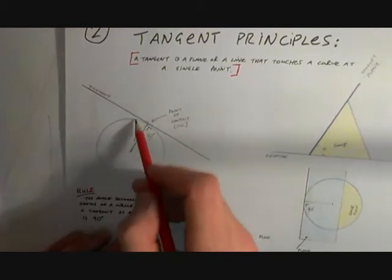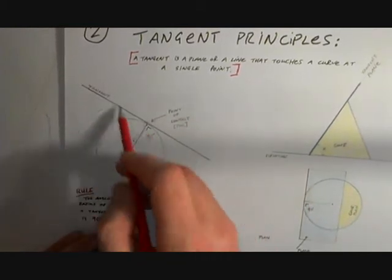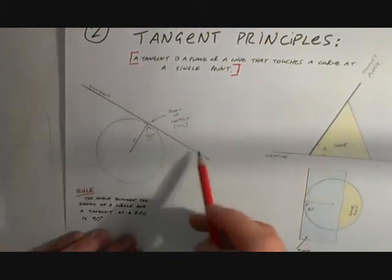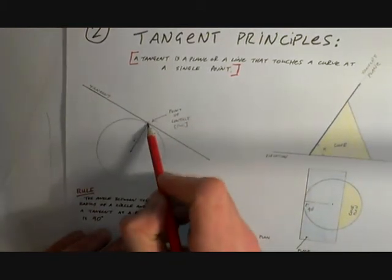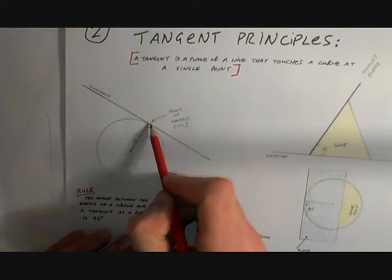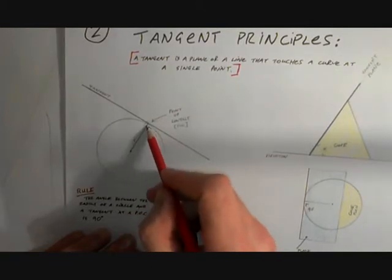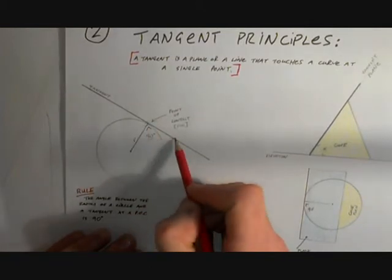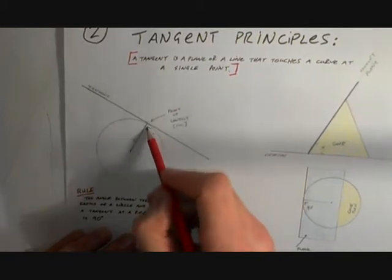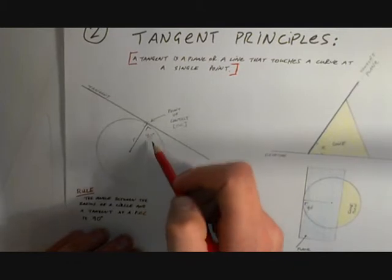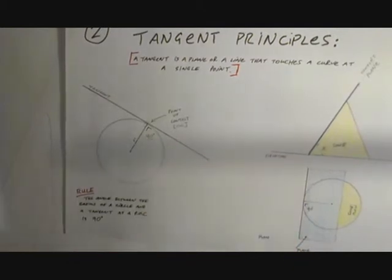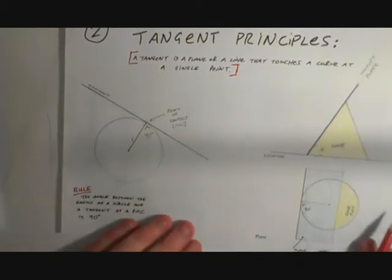The rule is: the angle between the radius of a circle and the tangent at the point of contact is always 90 degrees. So a circle with a tangent that hits at one point — at the point of contact to the radius — it is perpendicular, which is 90 degrees. This is always the rule.